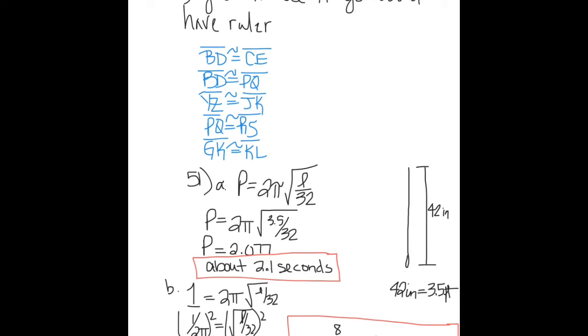Number 51 is the pendulum of a clock. The formula for the period in seconds is P equals 2 times pi times the square root of l over 32, where l is the length of the pendulum in feet. Question a says, what is the period P of the clock shown in seconds to the nearest tenth? Remember that l has to be in feet, so the first thing I did was turn 42 inches into feet. If you did not do that, your answer is going to be incorrect. P equals 2 times pi times the square root of 3.5 divided by 32. When you multiply that out, you find out that P equals 2.077. It said to the nearest tenth, so that's about 2.1 seconds.